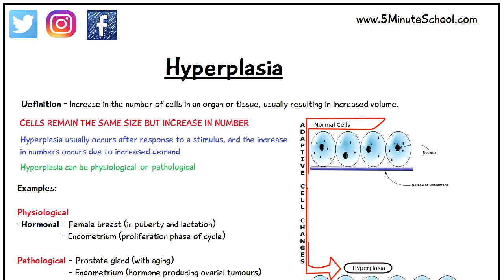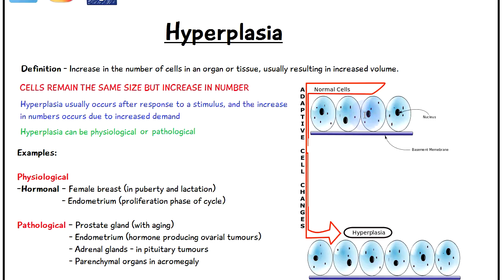Welcome to 5-Minute School and in today's video we're going to be talking about hyperplasia. Hyperplasia is when we have an increase in the number of cells in an organ or tissue, which usually results in an increase in volume. I've included this diagram here which shows you the structure of normal cells and in the case of hyperplasia we can see that these cells have increased in number.